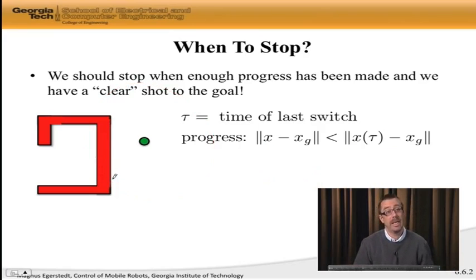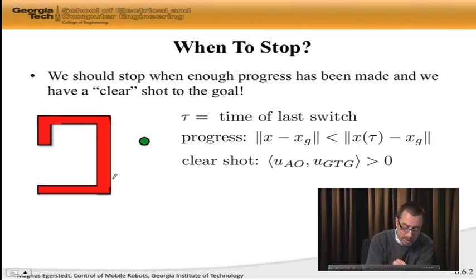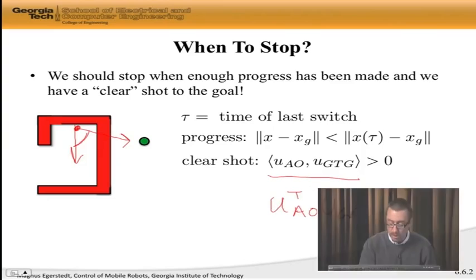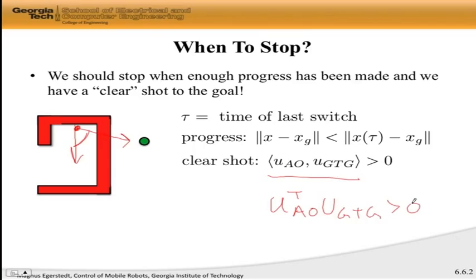We needed this notion of clear shot also. And the clear shot simply is this condition here, where if I'm sitting here then go to goal wants to take me in that direction, avoid obstacle wants to take me in this direction. And we already know how to check whether or not they are somehow in agreement. What that means simply is that this angle, the absolute value of this angle should be less than pi over 2, which we can simply encode by this inner product condition. We simply take and compute u avoid obstacle transpose u go to goal, and check if that's positive, then we have a clear shot. We don't know if we really know about other obstacles, but at least we have some notion of a clear shot. So these are the two pieces we need to determine when it's time to no longer move along the boundary.